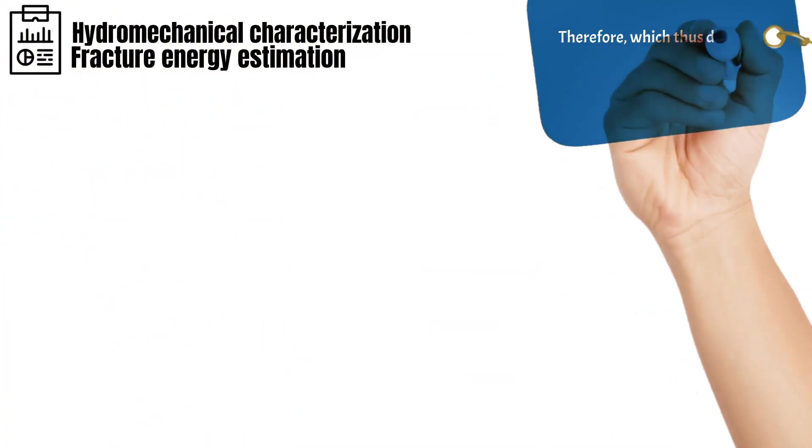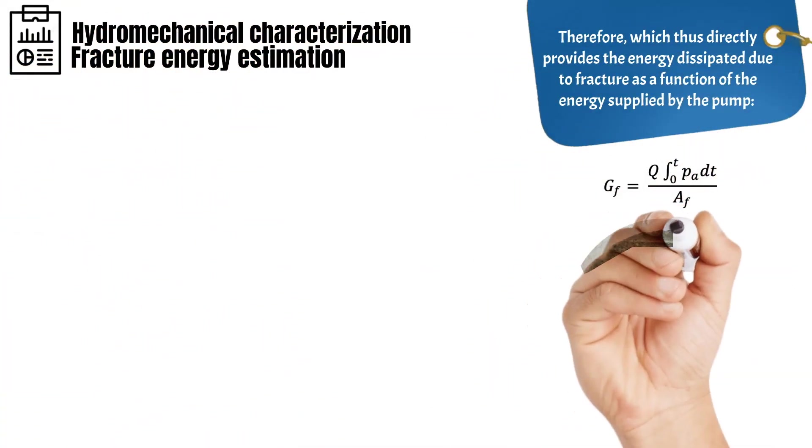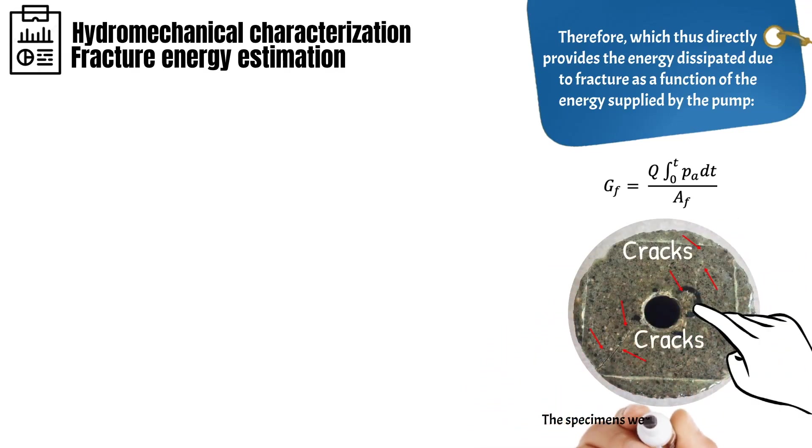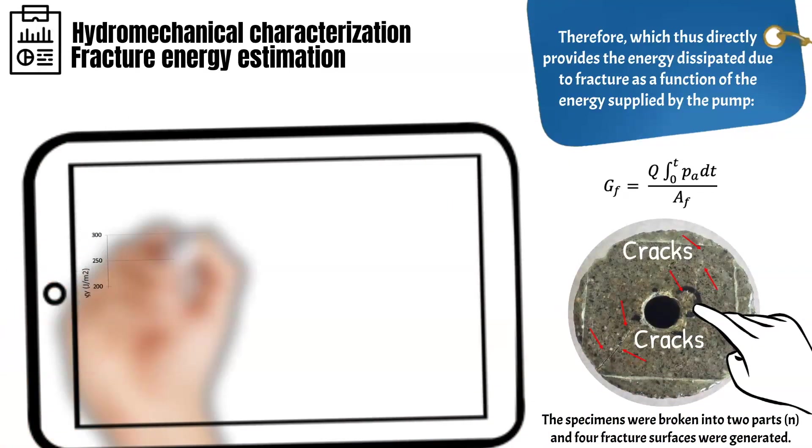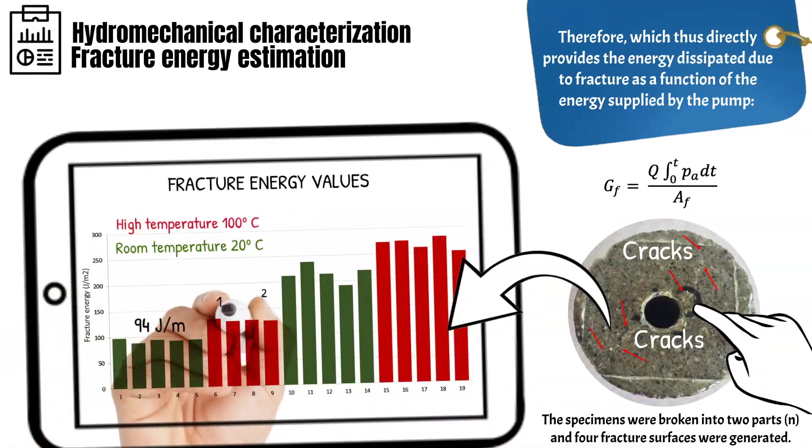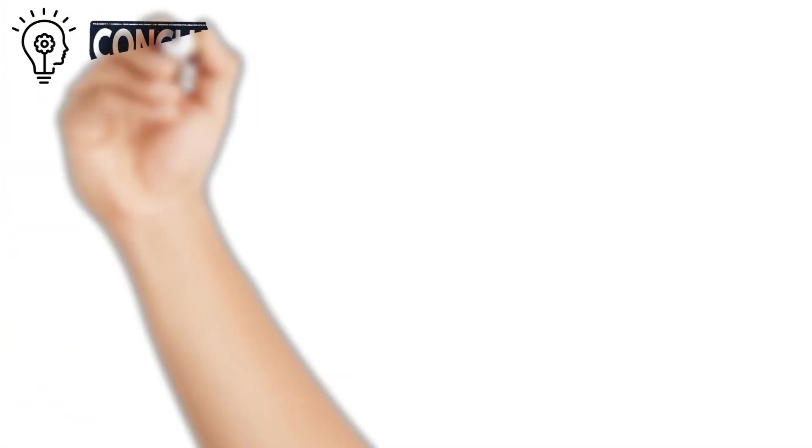We can see in this graphic the fracture energy result. For example, for the synthetic rocks at room temperature test, we obtained a fracture energy of 94 joules per square meter.